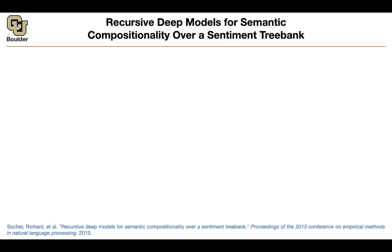I'm introducing this paper for two reasons. One is they're introducing a new dataset: the Stanford Sentiment Treebank. This is one of the benchmarks when you want to test the performance of your text classification model. The other reason is you're going to hear the term 'recursive deep neural networks,' and I don't want you to confuse it with recurrent neural networks — they are different.